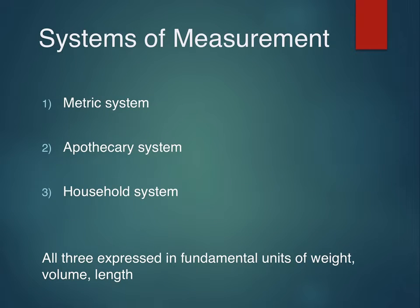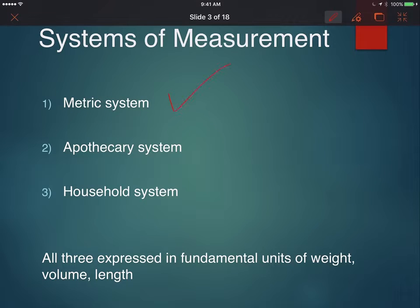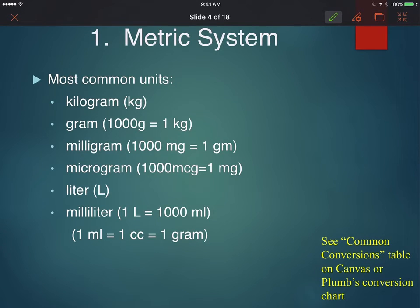There are three systems of measurement which I'm going to be talking about here: the metric system, which is probably the most commonly used, the apothecary system, and the household system. All three of these have different units that measure weight, volume, and length. The metric system is probably the most commonly used system of measurement in calculation of drug dosages and fluid rates, constant rate infusions.